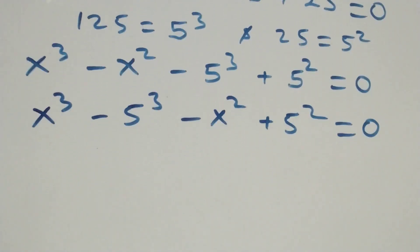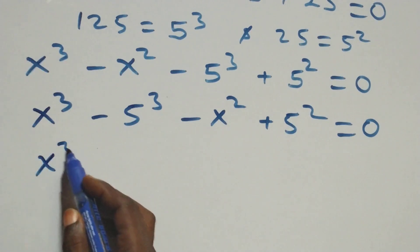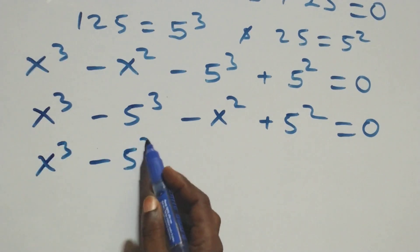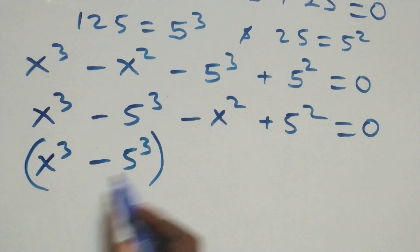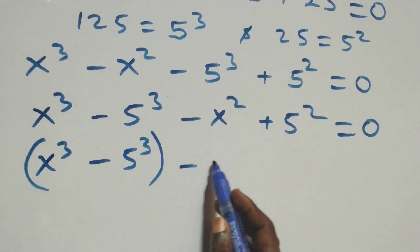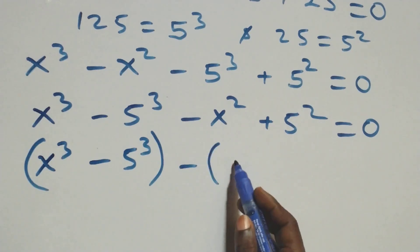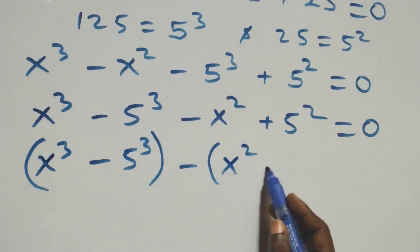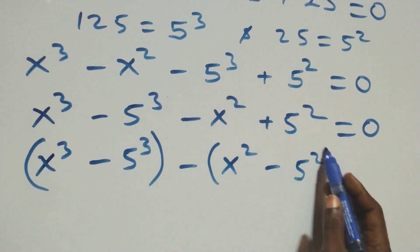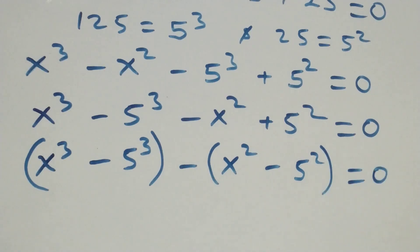When we group this, we have x cube minus 5 cube. We group these together, then minus — we factor it out and we have minus into brackets x square minus 5 square, close brackets, equals to 0.